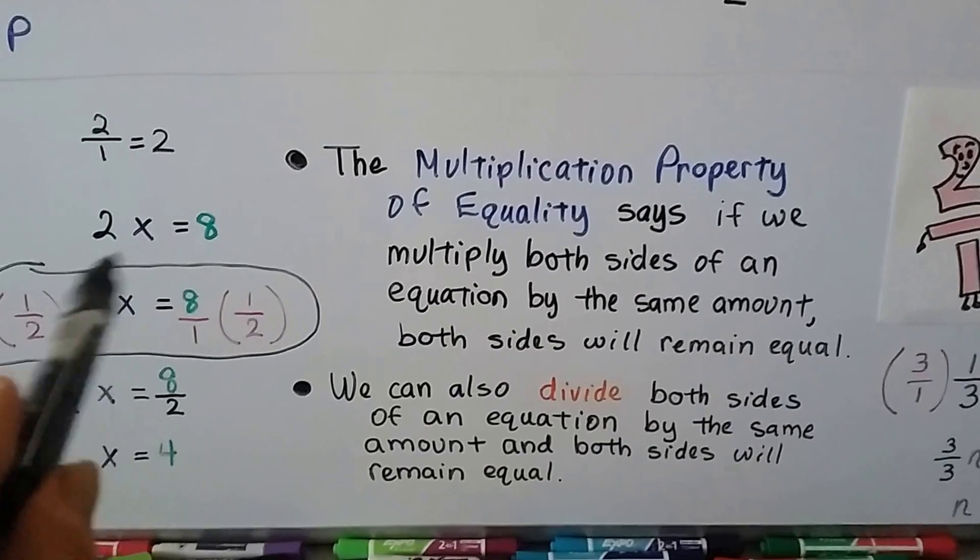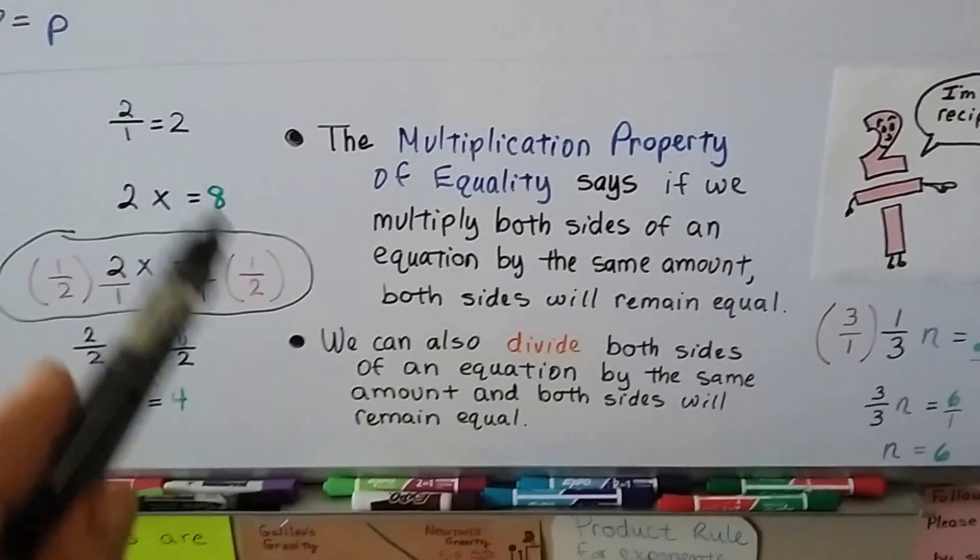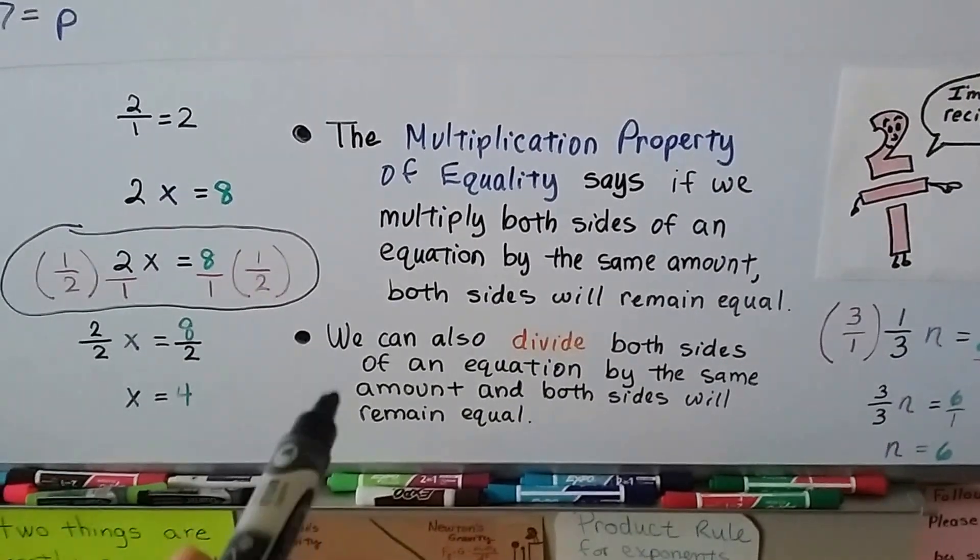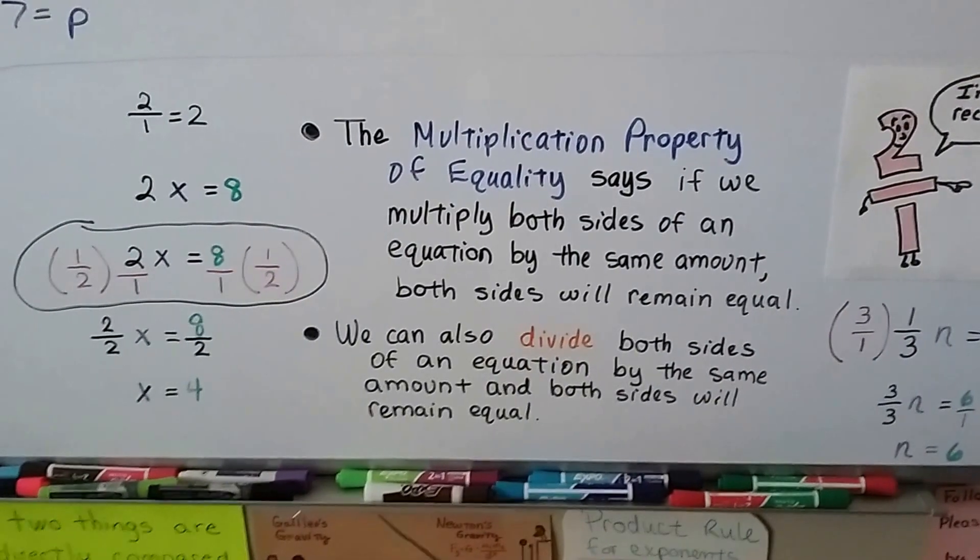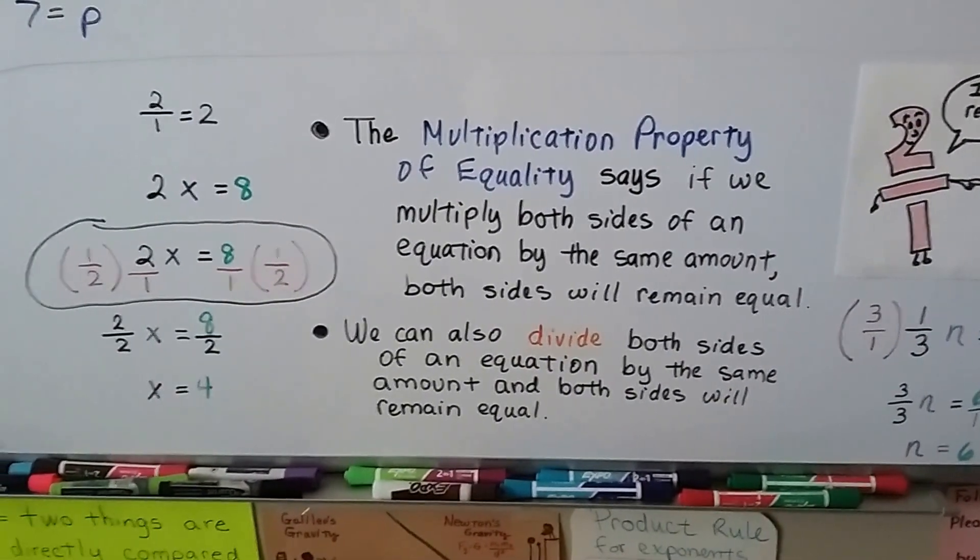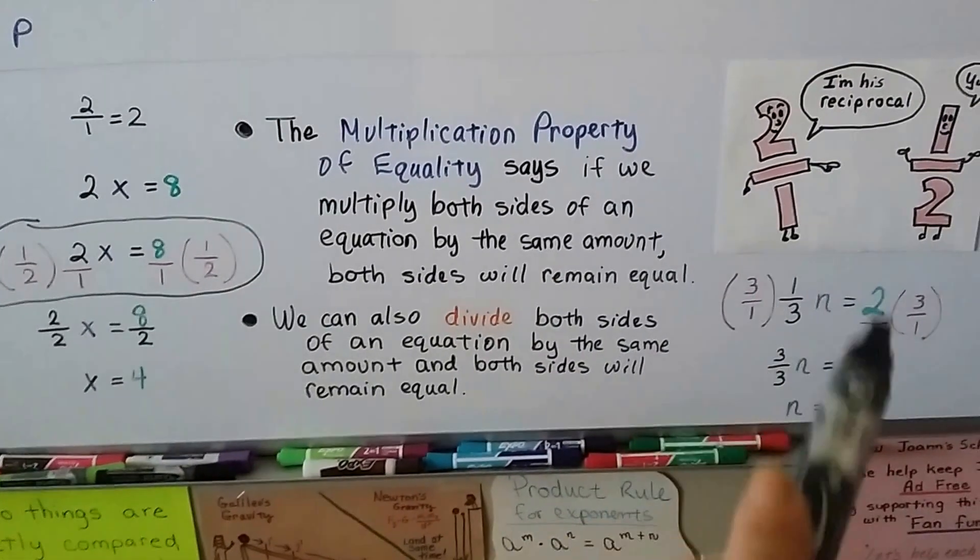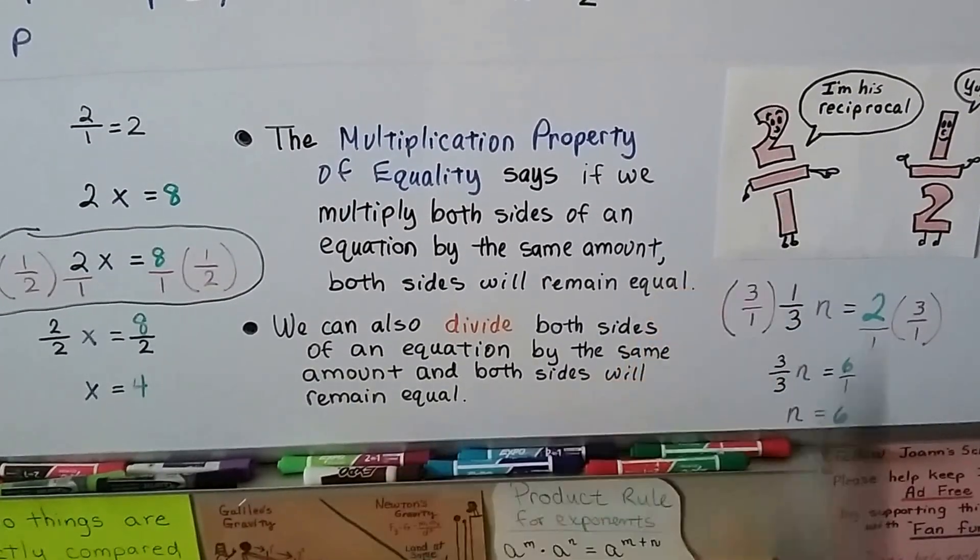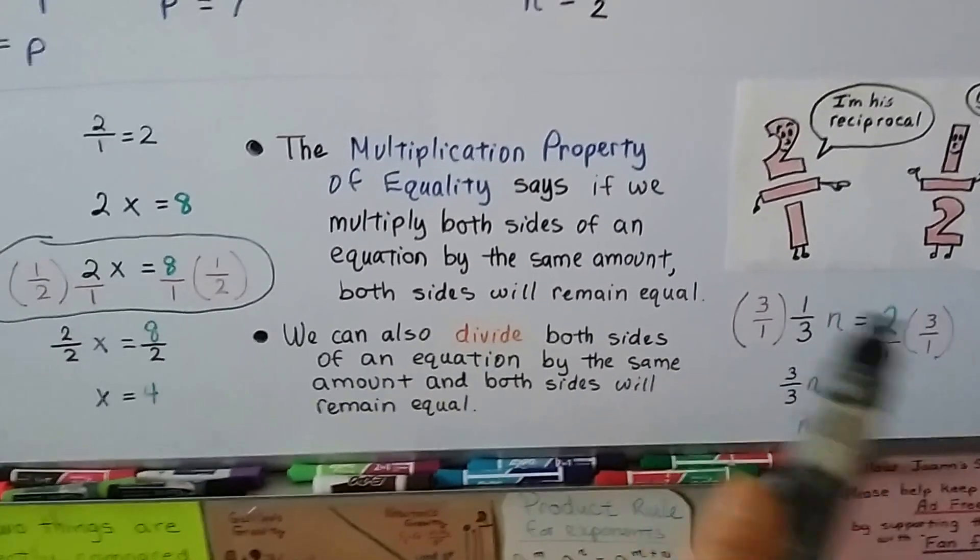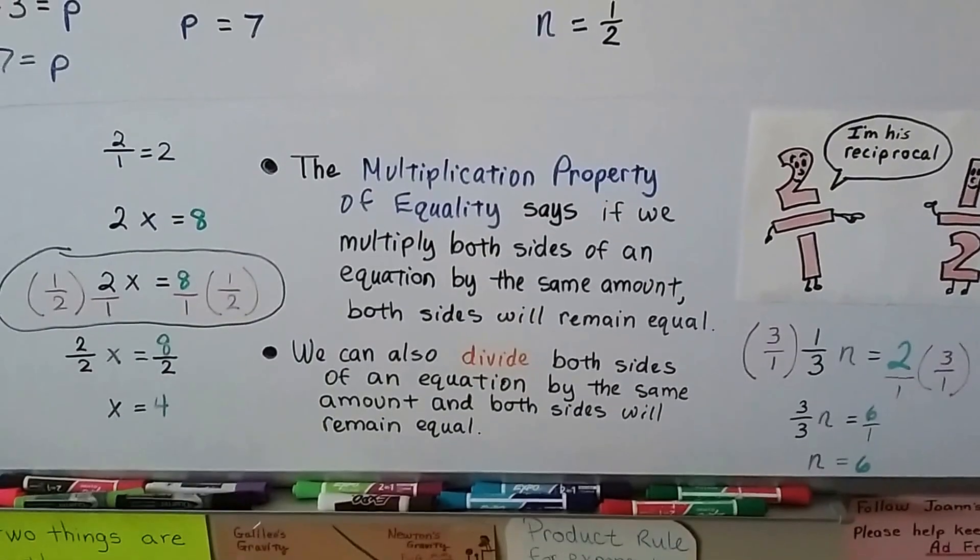If there's no fraction and you've got whole numbers, even decimals, you can just divide both sides of an equation by the same amount and both sides will remain equal and you'll be able to solve for the variable. If there's a fraction, then you are going to want to use the reciprocal and multiply both sides of the equation for the multiplication property of equality.